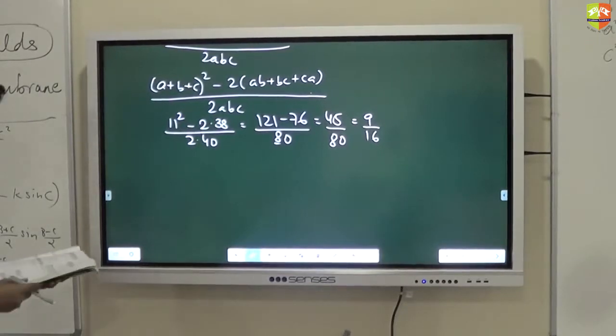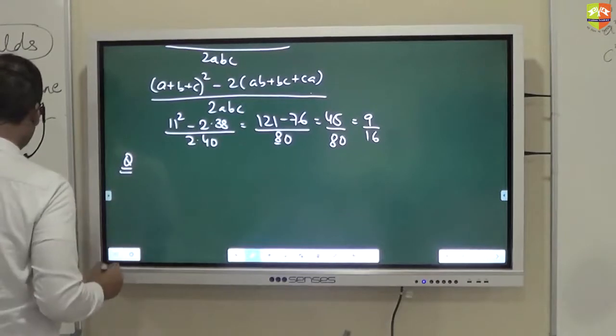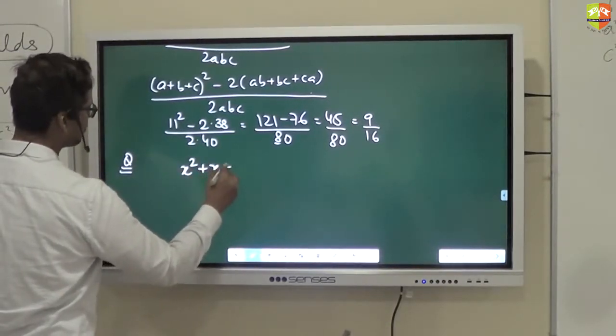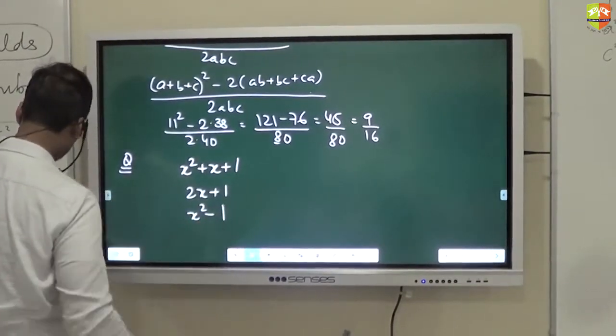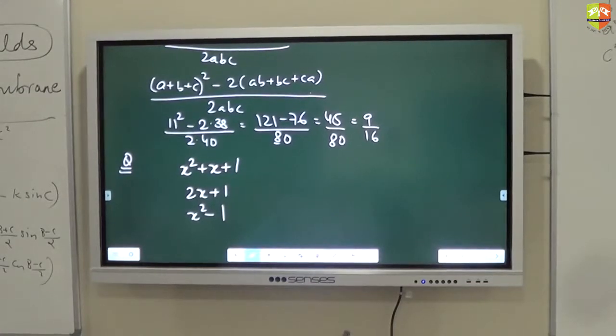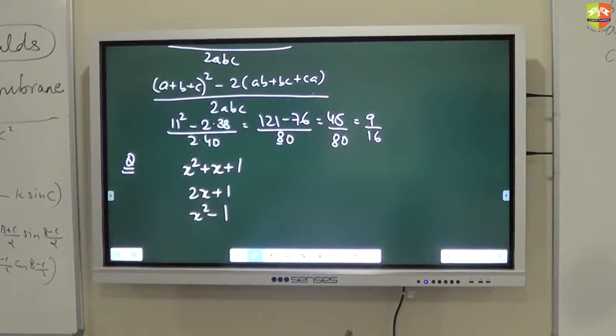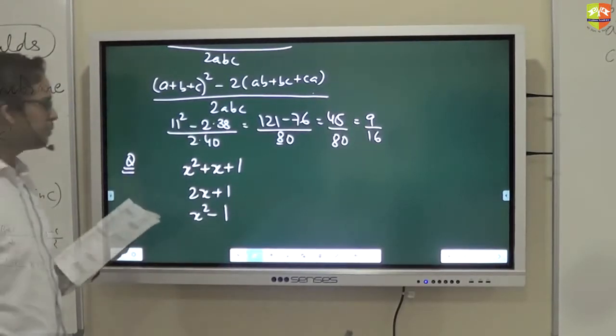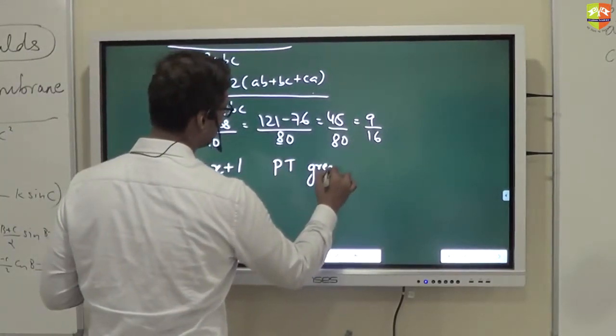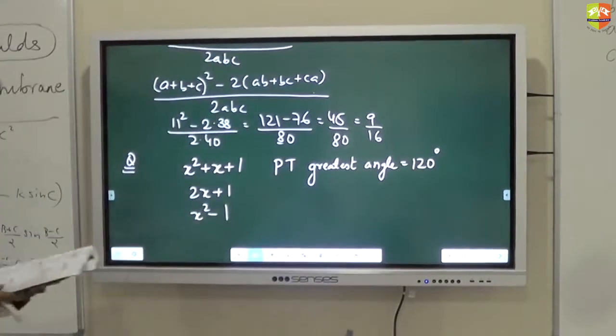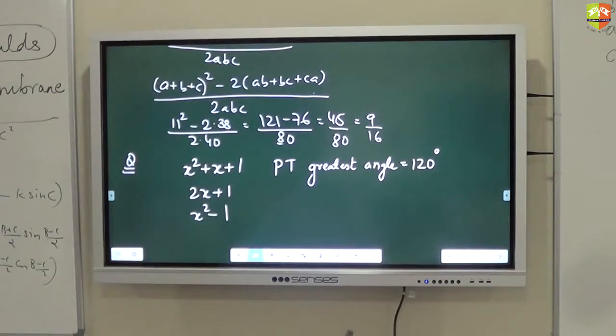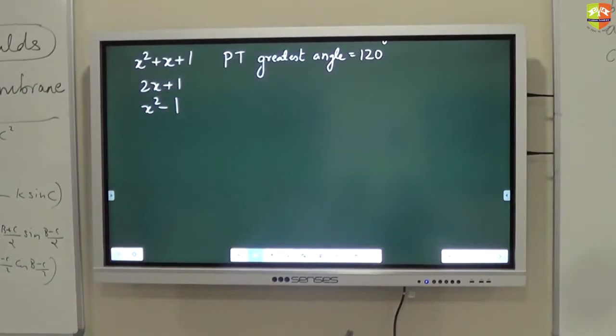If the sides of a triangle are x² + x + 1, 2x + 1, and x² - 1, then prove that the greatest angle in the triangle is 120°.